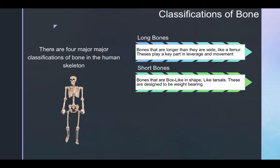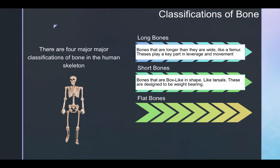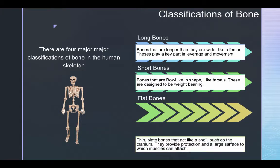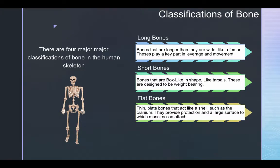Short bones are bones that are box-like in shape, like tarsals. These are designed to be weight-bearing. Flat bones are thin, plate bones that act like a shell, such as a cranium. They provide protection and a large surface to which a muscle can attach.